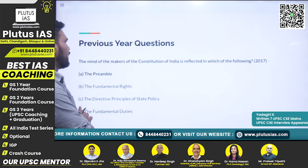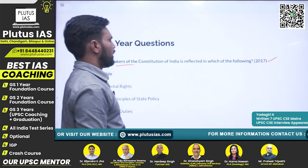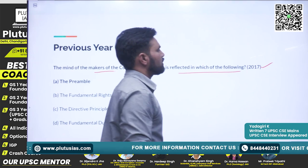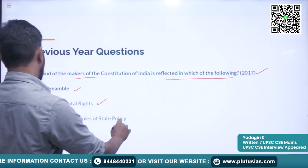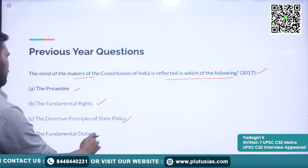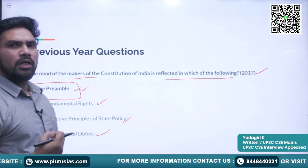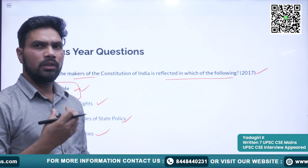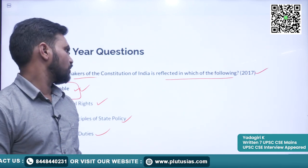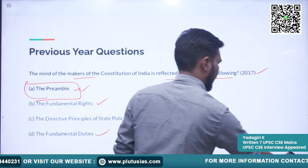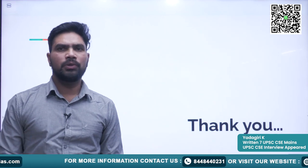The last question for today, also from 2017: 'The mind of the makers of the constitution of India is reflected in which of the following?' The options are: (A) the preamble; (B) the fundamental rights; (C) Directive Principles of State Policy; (D) the fundamental duties. The correct answer is option A — the preamble actually shows the aims and vision of the founding fathers of India. Thank you for joining the class. That's all for today, see you next time.